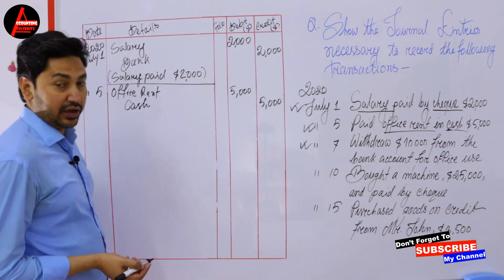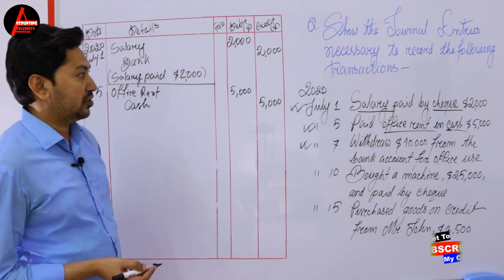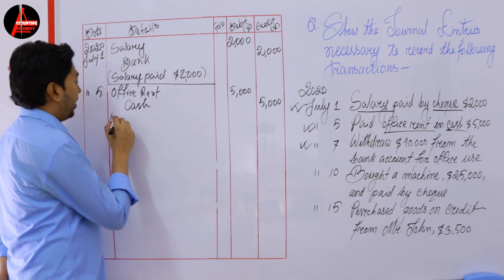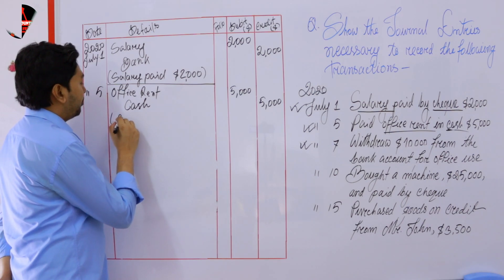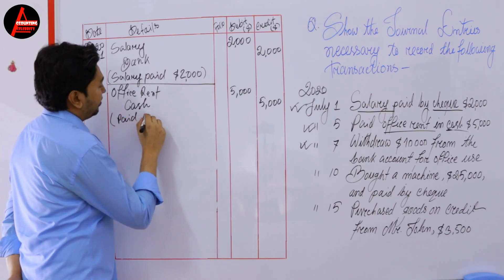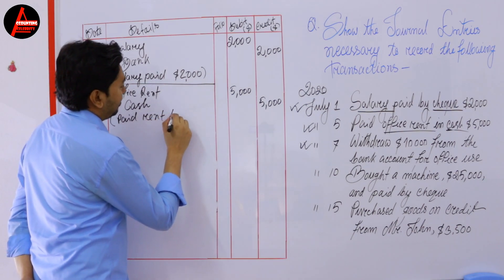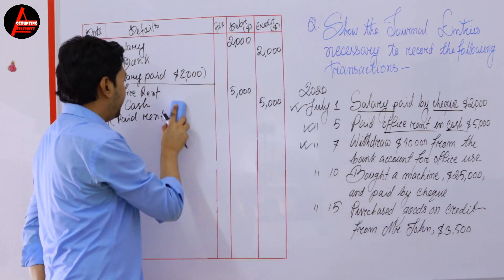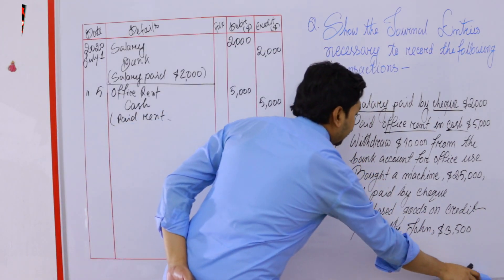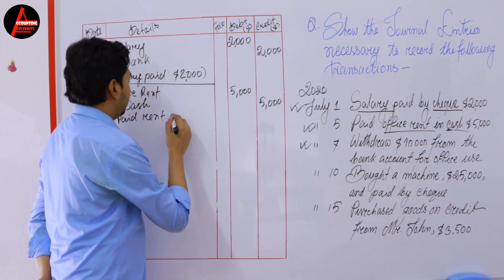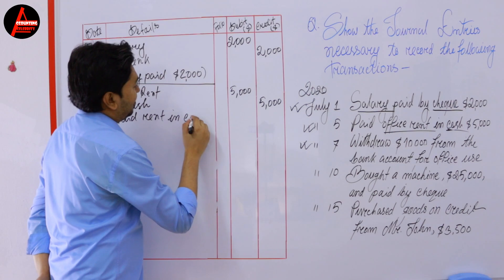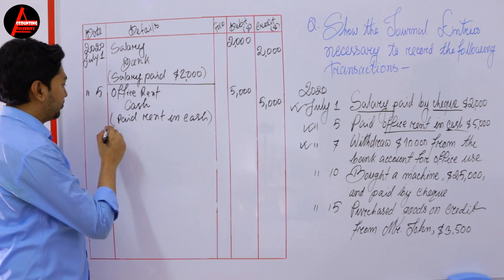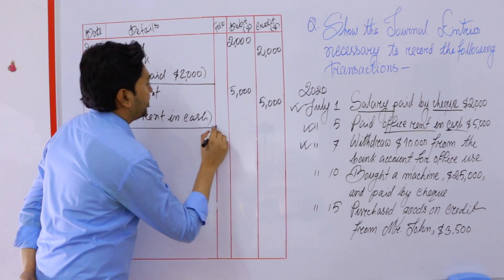Now we need to write a short note from the transaction. We can write 'Paid rent in cash.' So write that here: 'Paid rent in cash.' Now close this transaction.